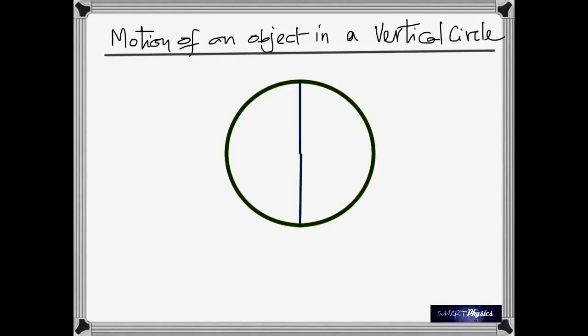At both points, the weight of the object is going to act vertically downward. Its weight acts vertically down at both points — at the top and at the bottom. The tension in the string is always going to be toward the center of the circle. So the tension at the lowest point and the tension at the highest point are both directed toward the center of the circle.